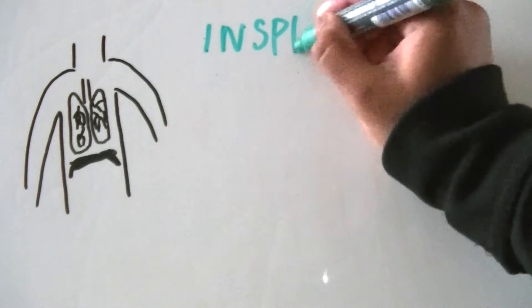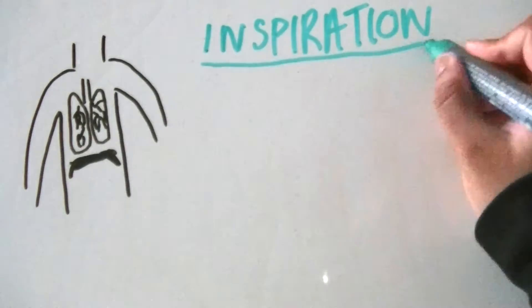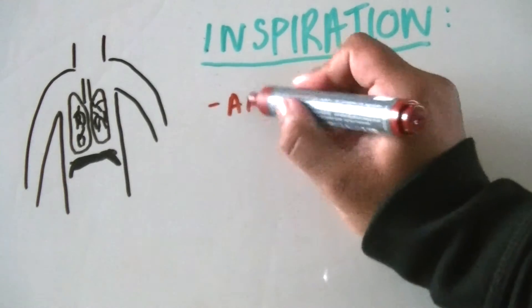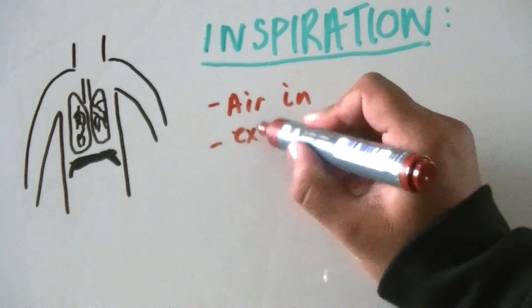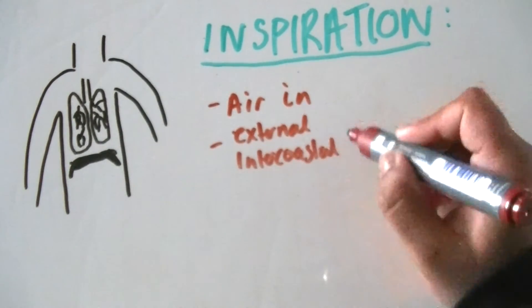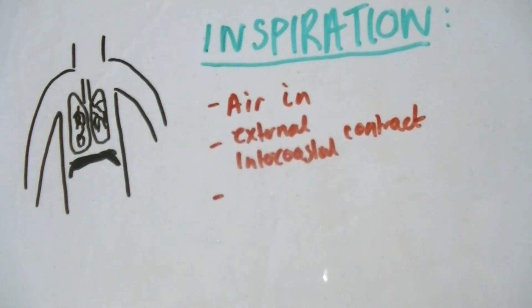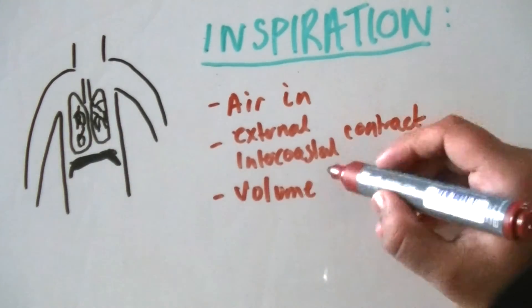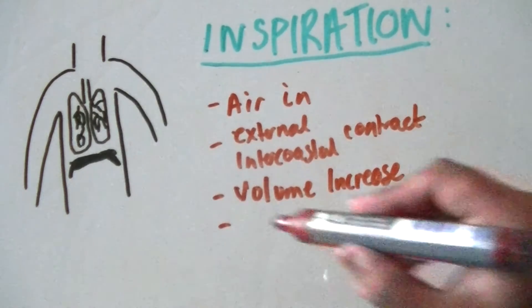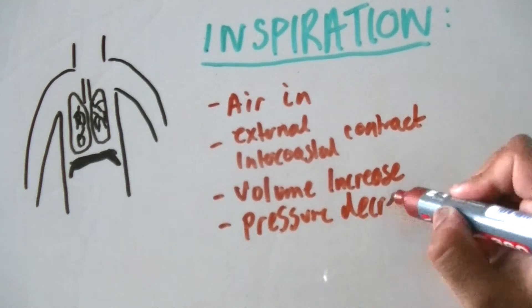The diaphragm muscles contract, causing it to flatten, which also increases the volume of the thorax. The increased volume results in a decrease in pressure in the lungs. Air pressure in the atmosphere is now greater than in the lungs, so air is forced into the lungs. This process requires energy as ATP.